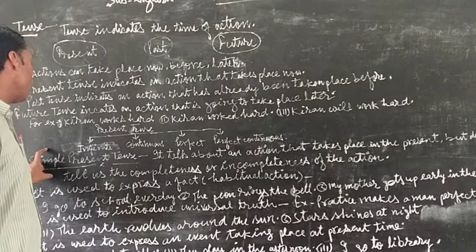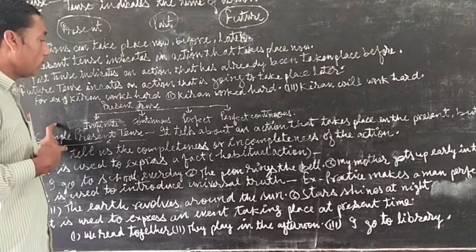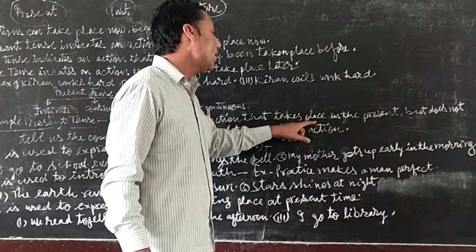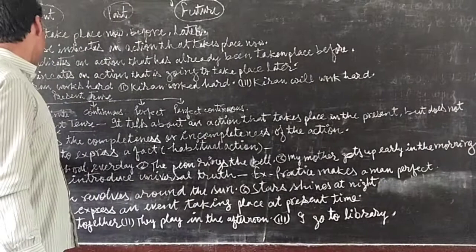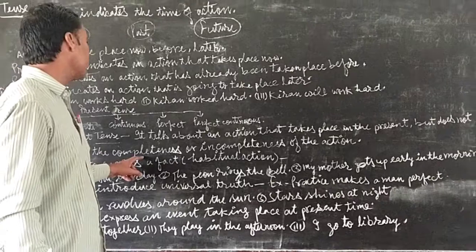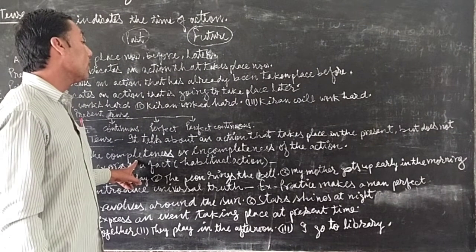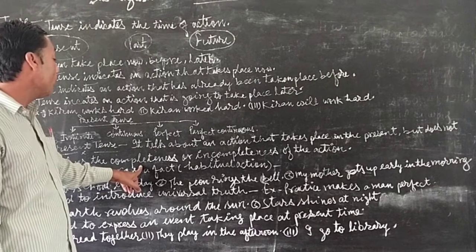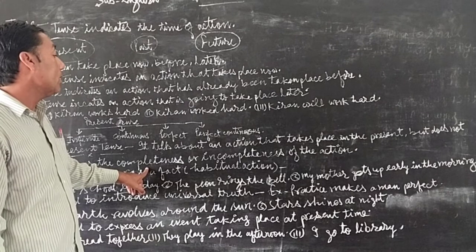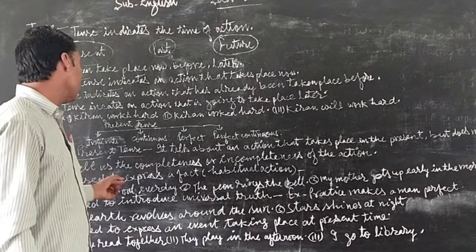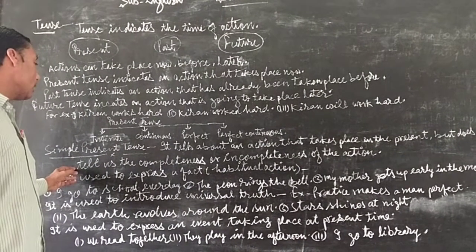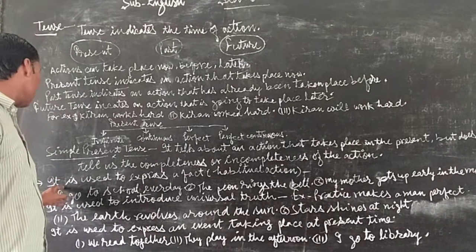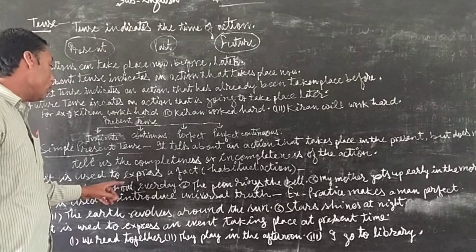First of all, simple present tense, also called present indefinite tense. It tells about an action that takes place in the present, but it doesn't tell us the completeness or incompleteness of the action. That is why it is named indefinite — indefinite means unspecified. It is used to express a habitual or regular action.